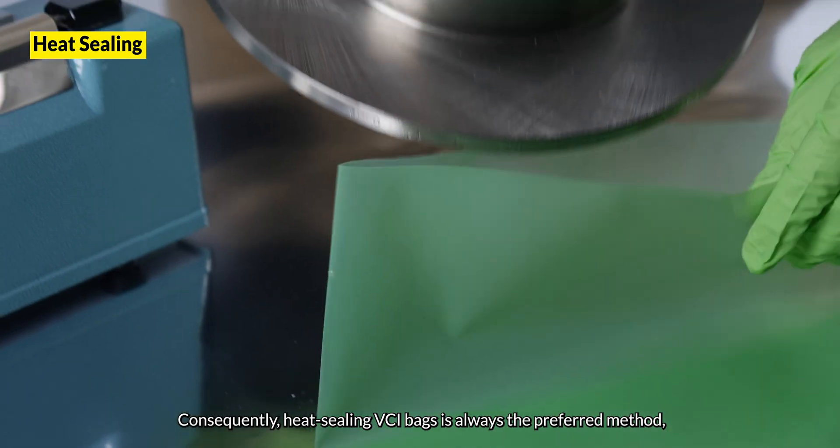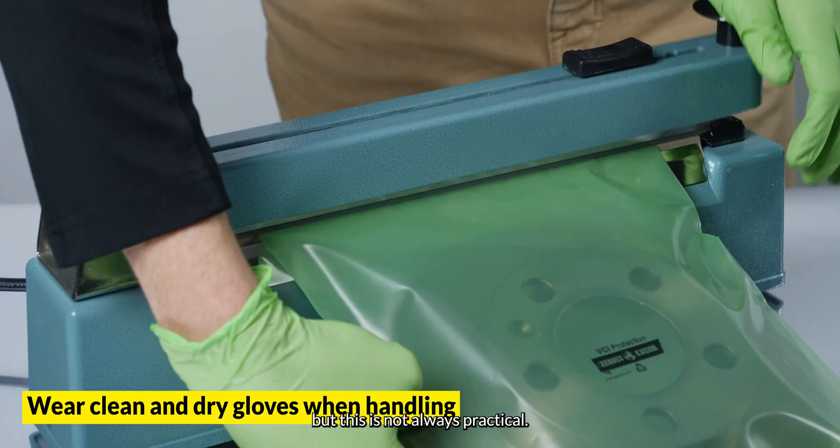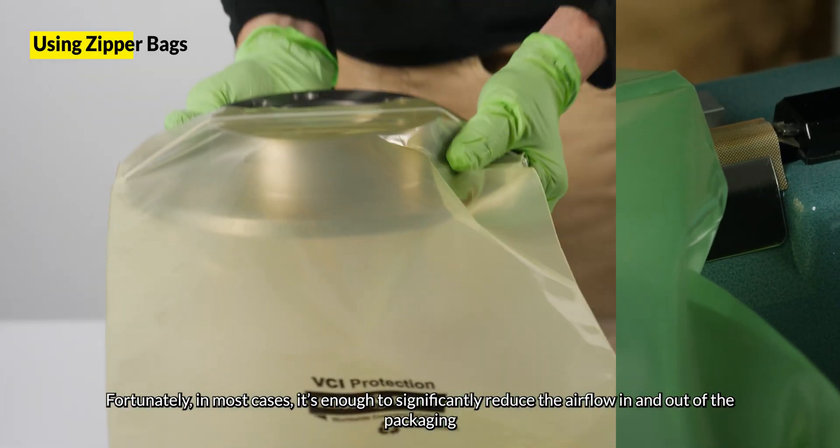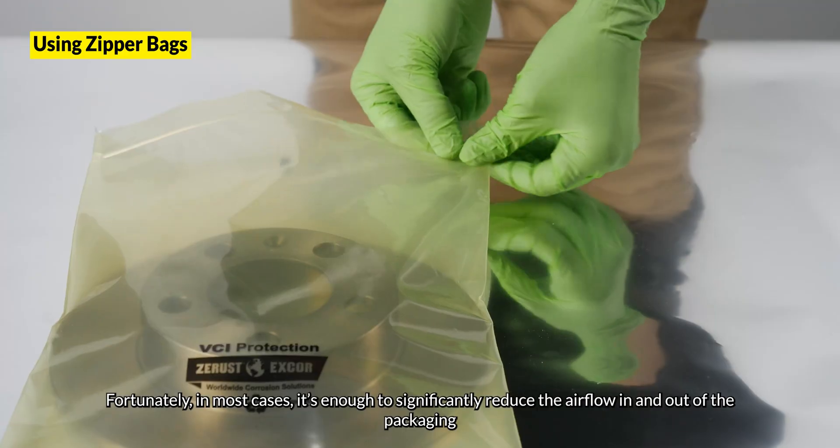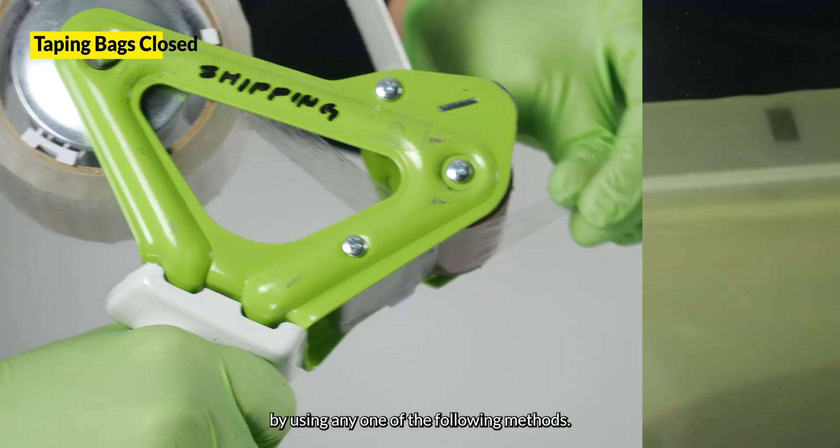Consequently, heat sealing VCI bags is always the preferred method, but this is not always practical. Fortunately, in most cases it's enough to significantly reduce the airflow in and out of the packaging by using one of the following methods.